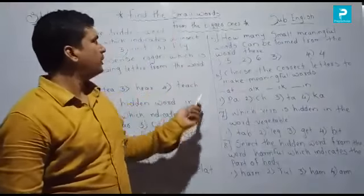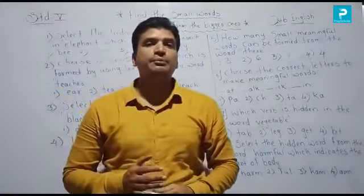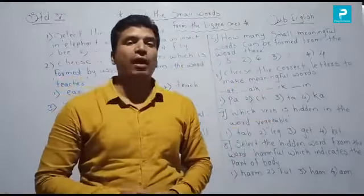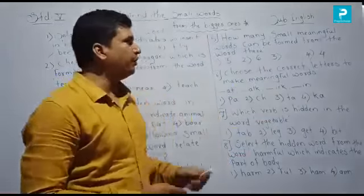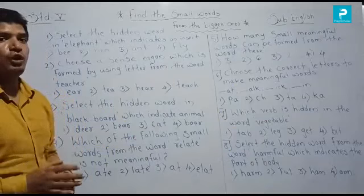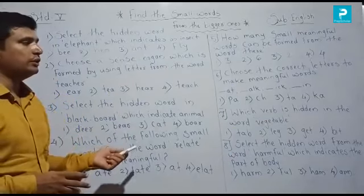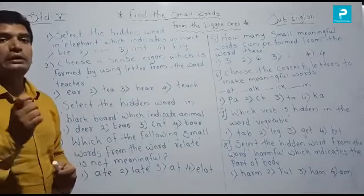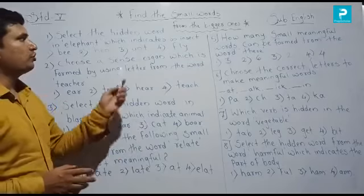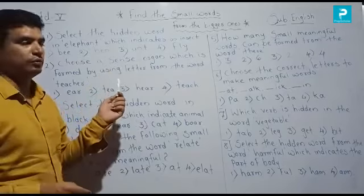Here are some questions on 'Find the small words from the bigger ones.' In your follow-up exam, questions come on this topic and every question has 4 options. We will solve them now. Every time I will tell you: if you solve any question, read it at least 2 times. First, read all the questions — that time you know the proper answer — and then the second time, try to solve it. So first I will read it; you listen carefully and look on the board.